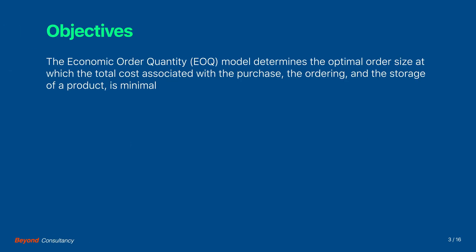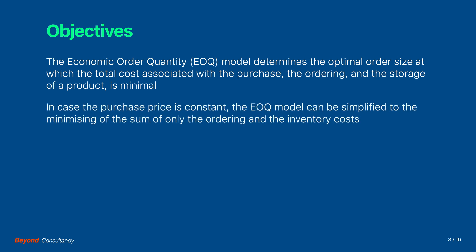The economic order quantity model determines the optimal order size at which the total cost associated with the purchase, the ordering and the storage of a product is minimal. In case the purchase price is constant, the model can be simplified to the minimizing of the sum of only the ordering and the inventory costs.